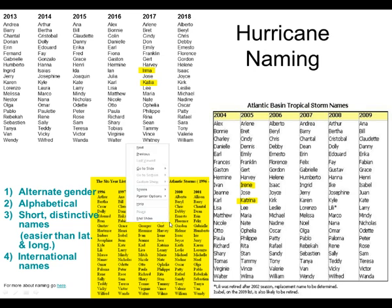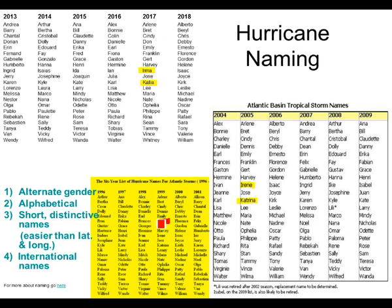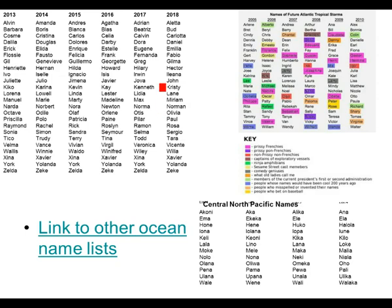Floyd was a really bad storm, and you see that Floyd was replaced for 2005 with Franklin. Franklin wasn't a really bad storm, so they kept it for 2017. There are also name lists for other oceans — some Pacific Ocean names for storms that might get Hawaii, Central North Pacific names, and links to other name lists too, because typhoons and cyclones in other countries are going to have different name lists as well.